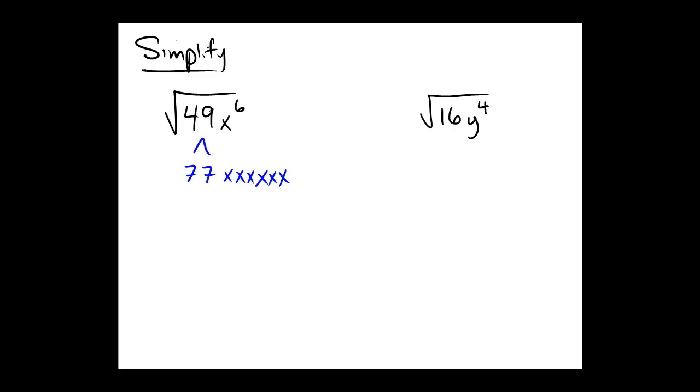Are there any pairs to escape from the square root prison here? Notice there's a pair of 7s, a pair of xs, a pair of xs, and a pair of xs.